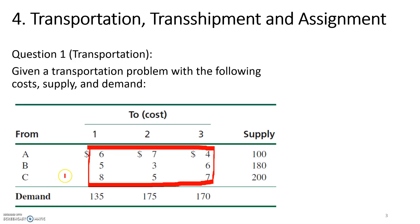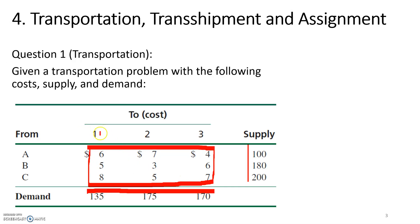On this side of the table we have the supply. Source A is able to supply a maximum of 100 units, source B 180 units, and source C 200 units. At the bottom we have the demand: destination 1 demands 135 units, destination 2 demands 175 units, and destination 3 demands 170 units.